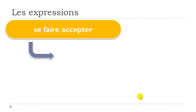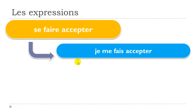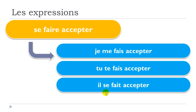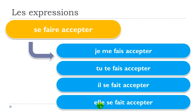Let's see how to conjugate se faire accepter at the present tense. You will have to modify the se when you conjugate it. For the first person: je me fais accepter. Second person: tu te fais accepter. Third person masculine: il se fait accepter. Feminine: elle se fait accepter. Remember: je → me, tu → te, il/elle → se.